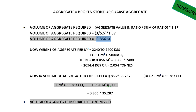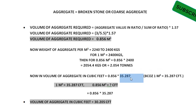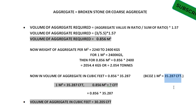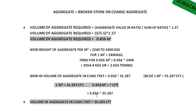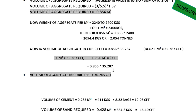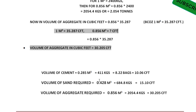Now we convert the aggregate volume of 0.856 cubic meters to cubic feet. We multiply 0.856 × 35.287 because one cubic meter equals 35.287 cft. So volume of aggregate in cubic feet = 30.205 cft. With this, we have completed our procedure.